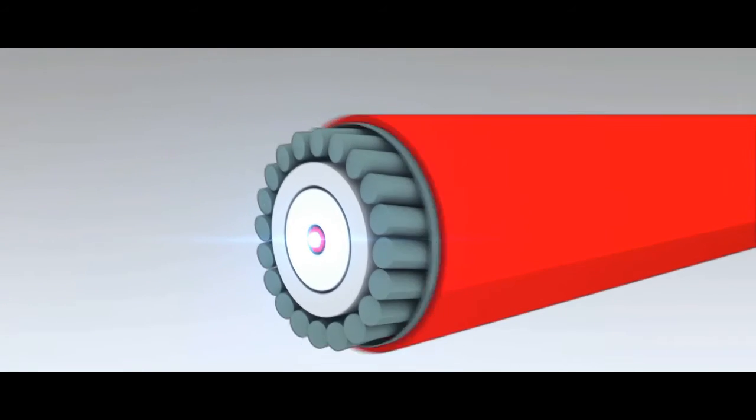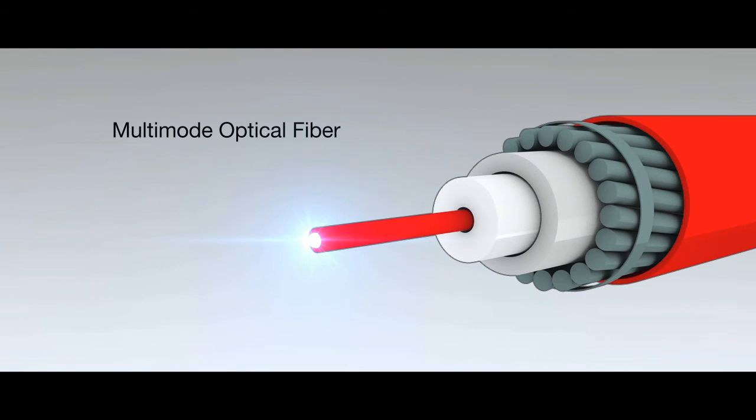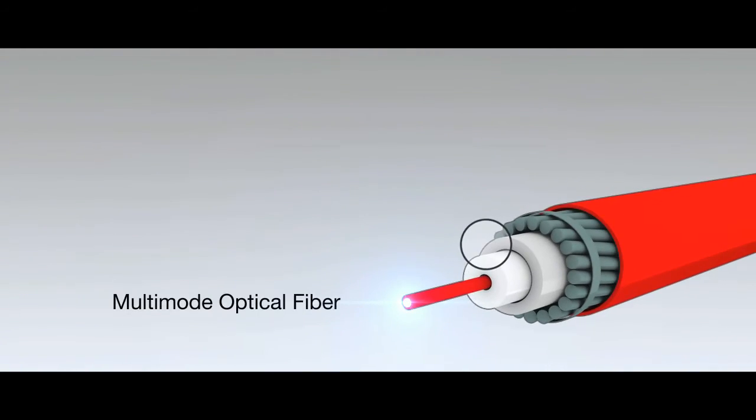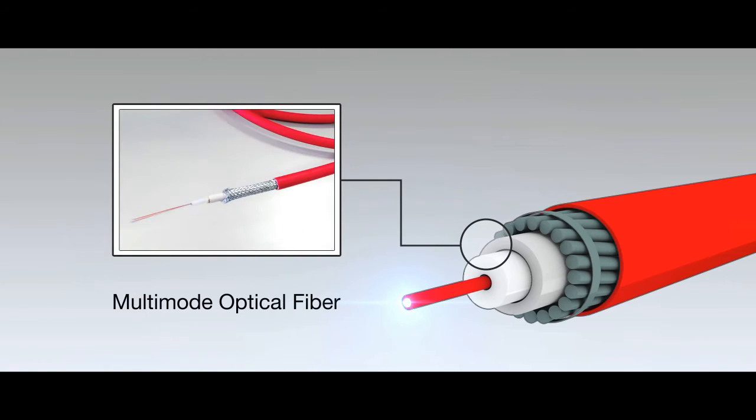The sensing element is the multi-mode optical fiber itself, which is inserted inside properly designed cabling. The cable is available in many varieties depending on the operating temperature range and type of installation.